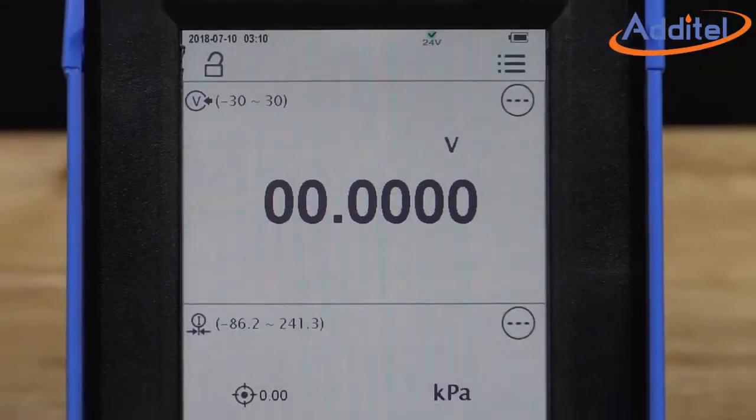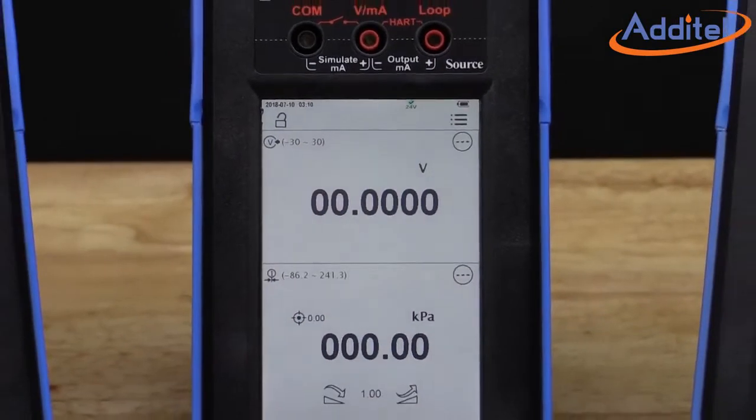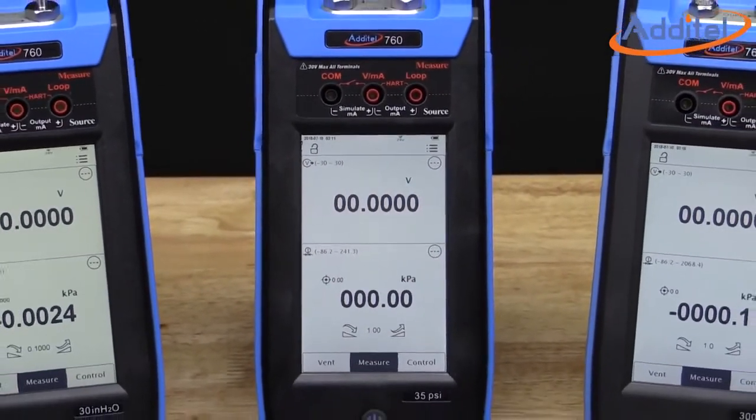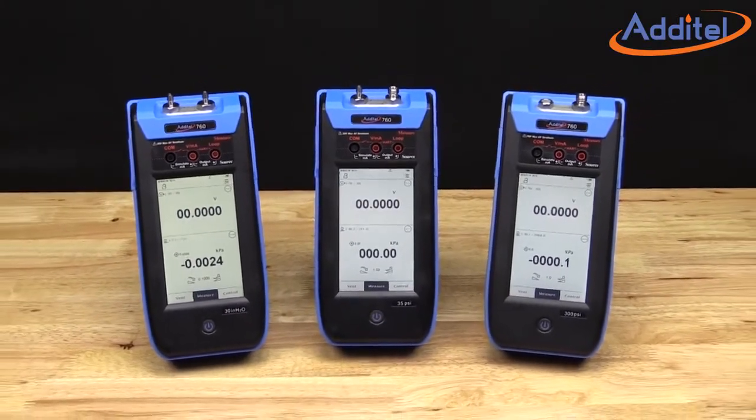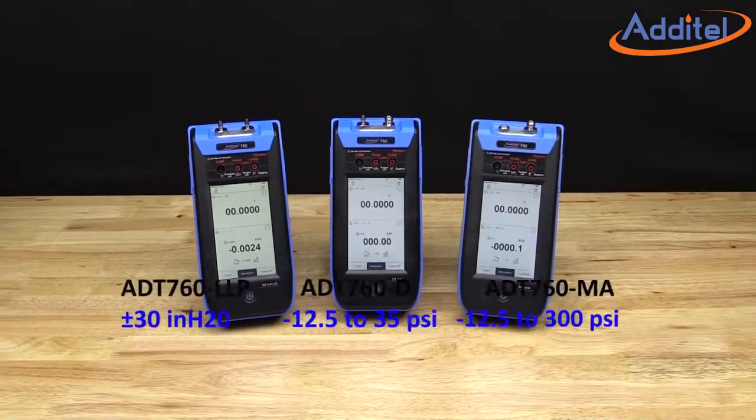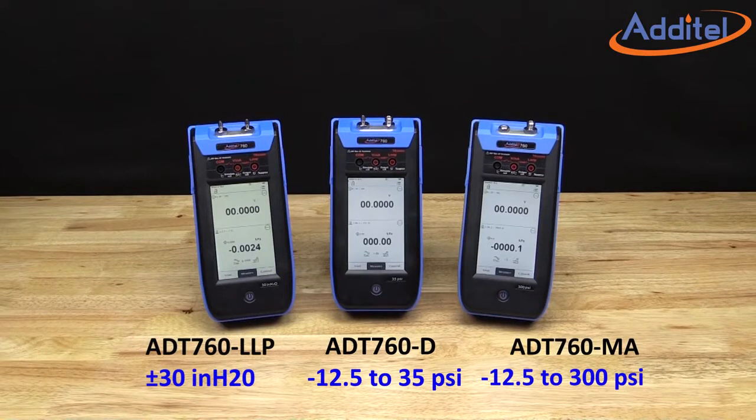The Additel ADT760 series pressure calibrator provides a truly innovative handheld solution for pressure calibration work. With models covering a range of minus 30 to 300 psi, the Additel 760 series has plenty of range to cover your calibration needs.